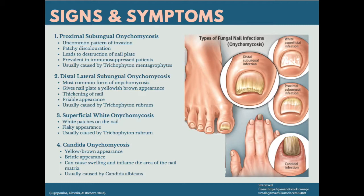Distal lateral subungal onychomycosis is the most common form of onychomycosis. It often appears as a yellowish-brown colour and can cause onycholysis, which causes the nail plate to detach from the nail bed. It can result in thickening of the nail and have a crumbled appearance. This is primarily caused by Trichophyton rubrum.